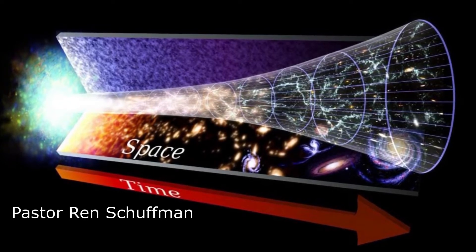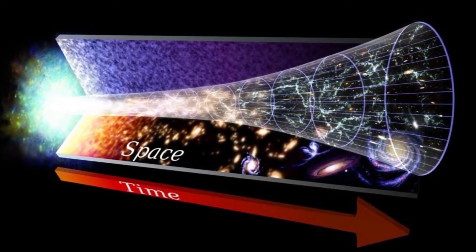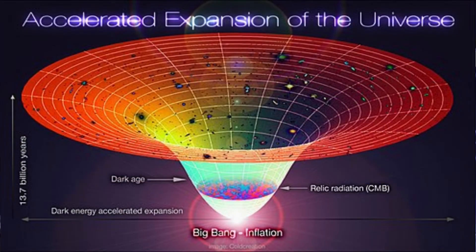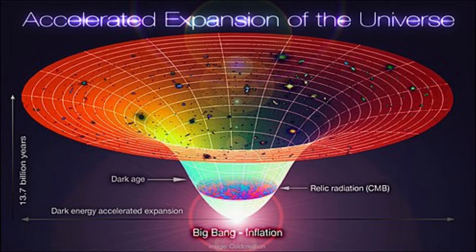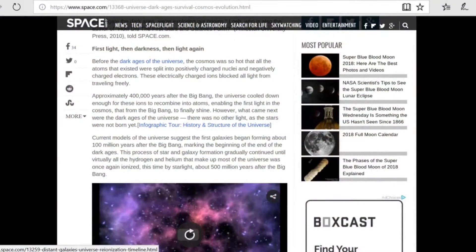Now what's interesting is that at one point in this expansion, there was a time called the Dark Ages. You can see that little section with red and blue. In theoretical physics, scientists look back with telescopes and can see this moment when there was no light in the universe. I have an article from space.com — a highly regarded, very secular site — about the Dark Age of the universe.